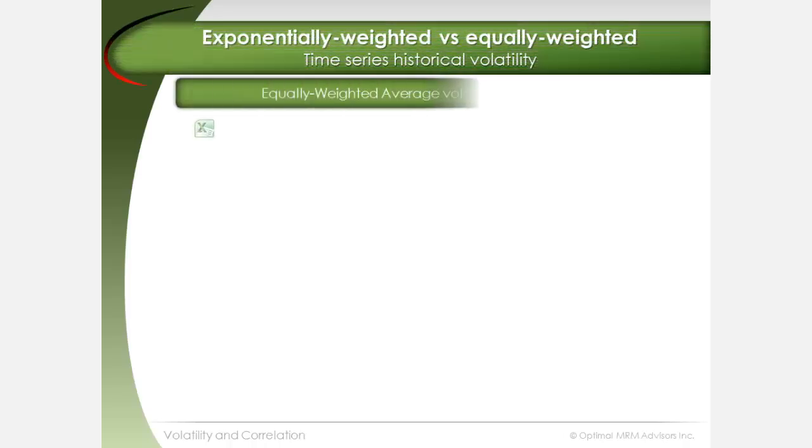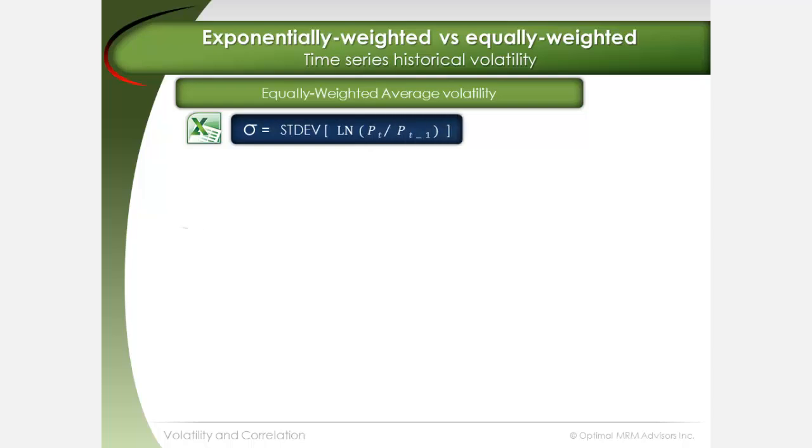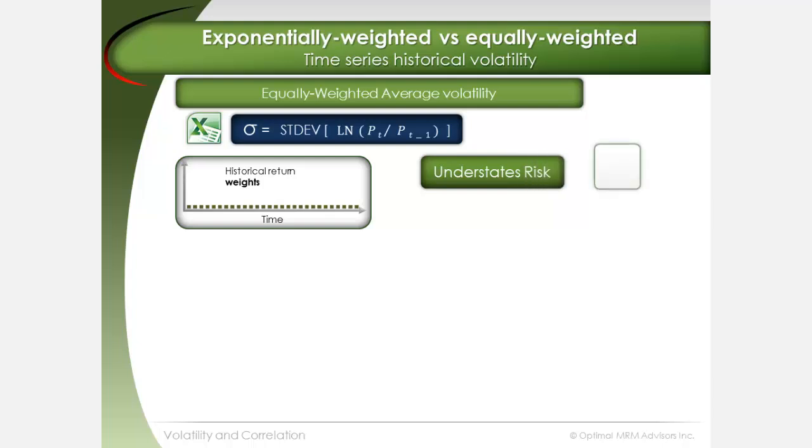The standard deviation formula implicitly assigns equal weights to all data points in the historical data series. Using the standard deviation formula to represent volatility can understate risk in times of heightened volatility and overstate it when volatility subsides.